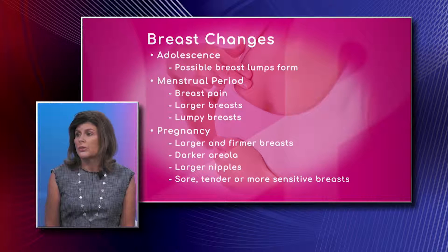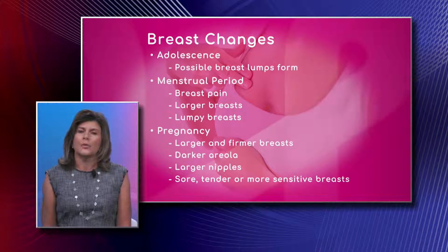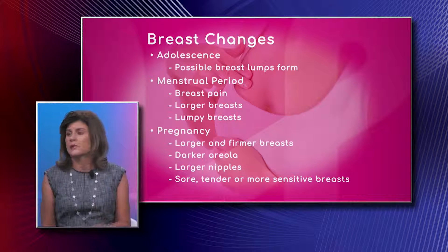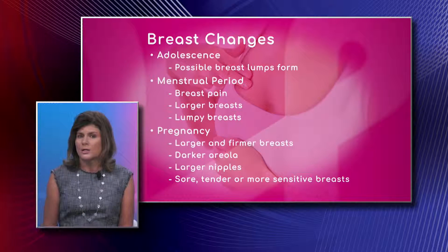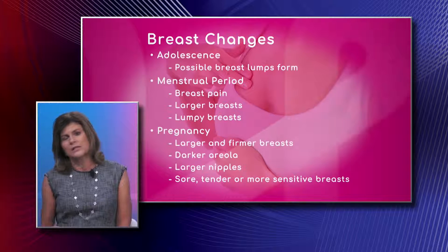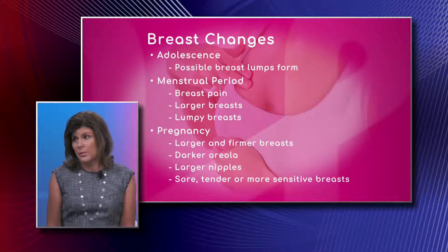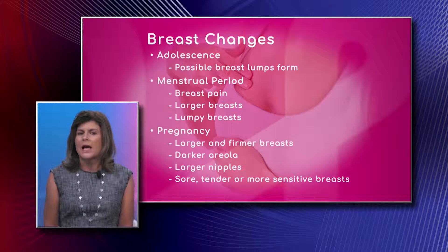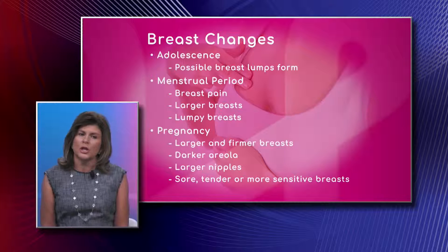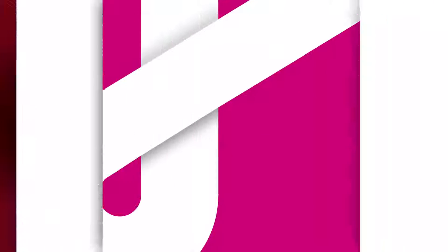Cyclical breast pain, which occurs during the menstrual period, is typically related to hormonal changes. Women have different peaks of different hormones depending on the time of their menstrual cycle. Early on we see a rise in estrogen, which causes stimulation of the ductal system and ovulation. During the second half, there's a rise in progesterone, which causes the breast lobules to form in anticipation of pregnancy. This can cause swelling, larger breasts, and a lumpier texture due to the enlarging glands.